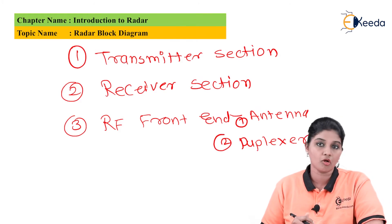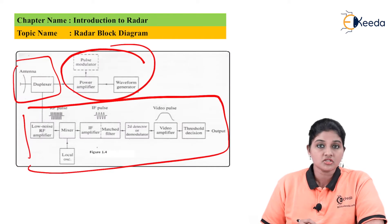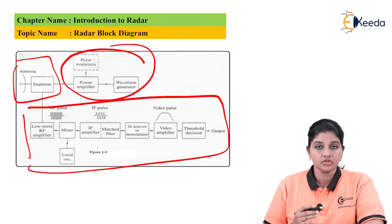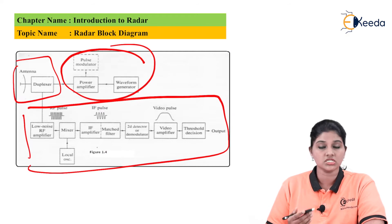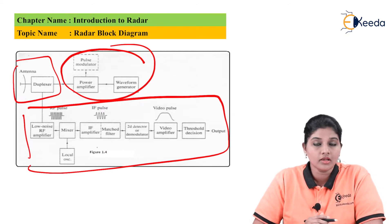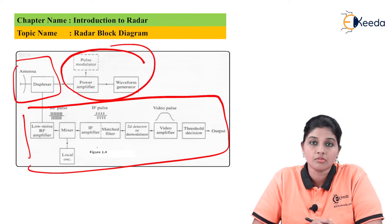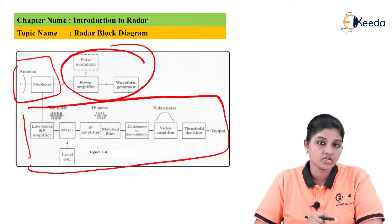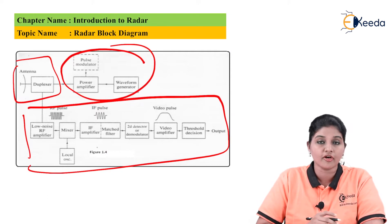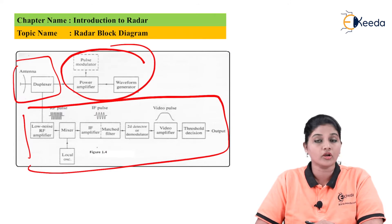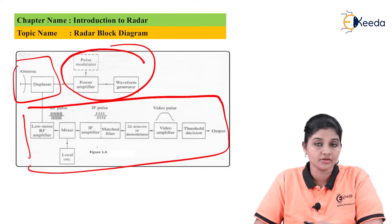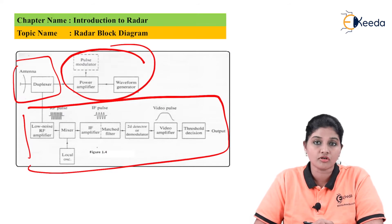Looking at the block diagram, the design of the transmitter section is much easier compared to the receiver section. The transmitter section uses a power amplifier or power oscillator. If it is a power amplifier, then a crystalline traveling wave tube or transistor amplifiers are used. If it is a power oscillator, then a magnetron oscillator is used, which is considered the best choice for radar systems.